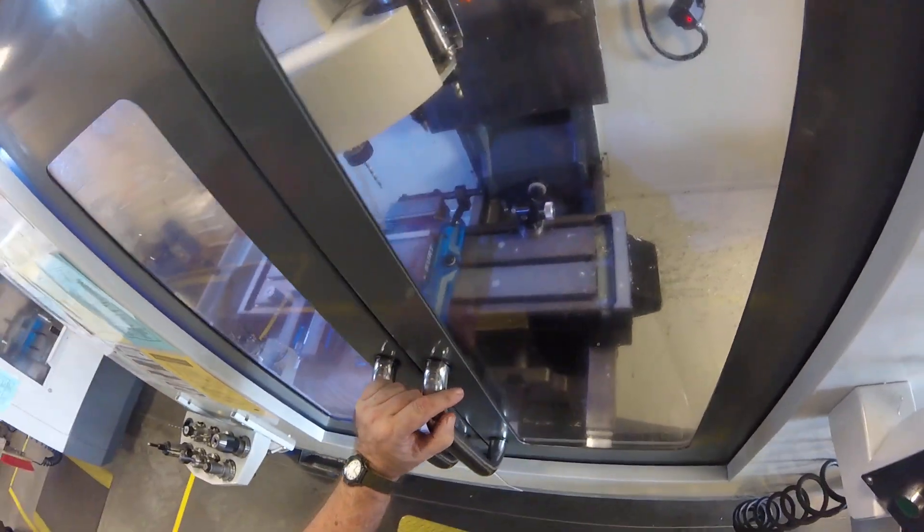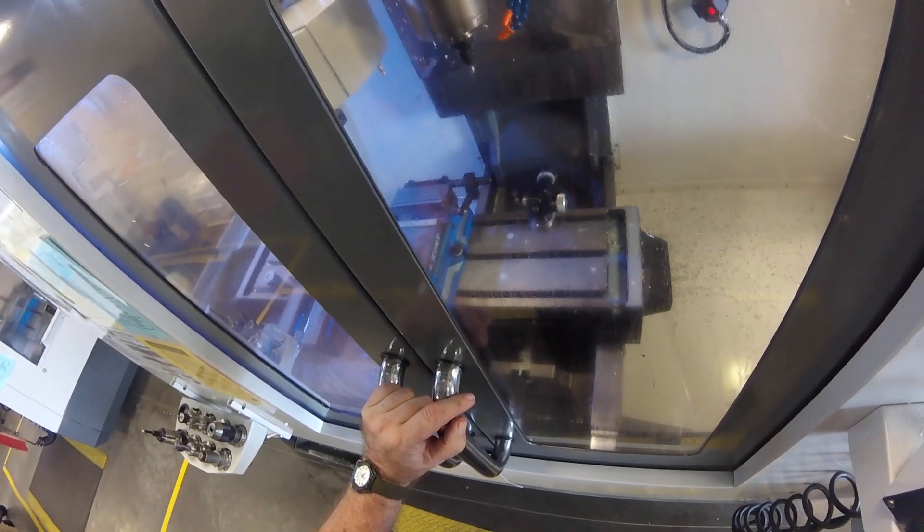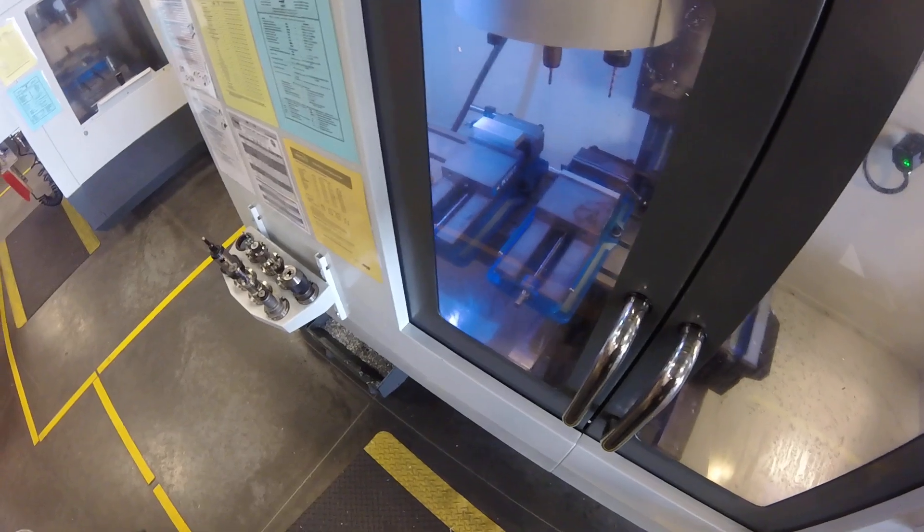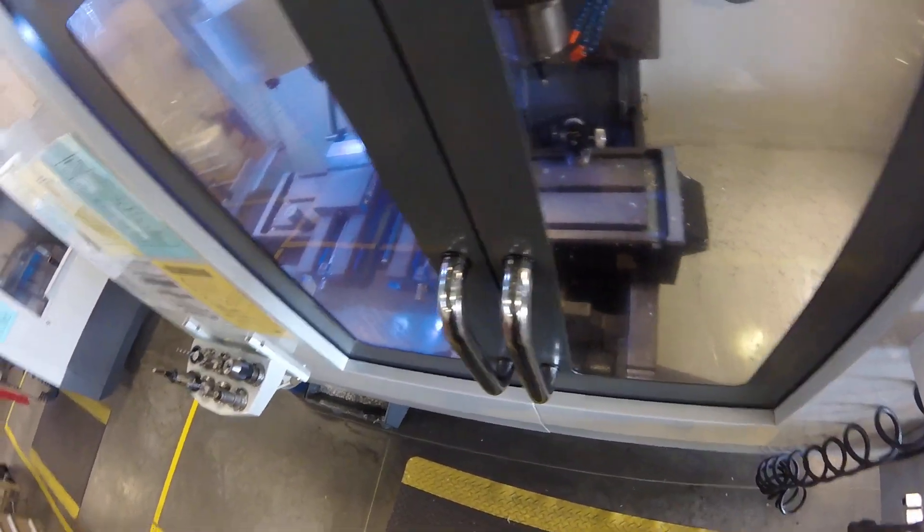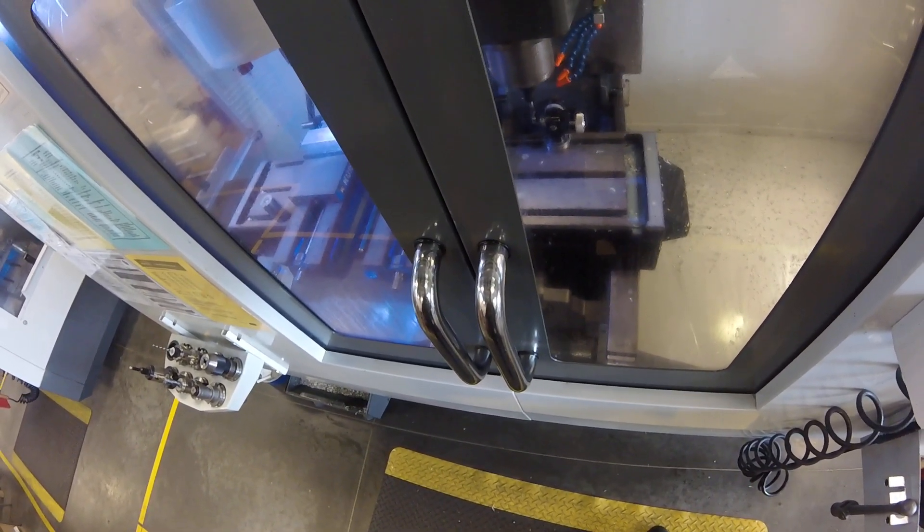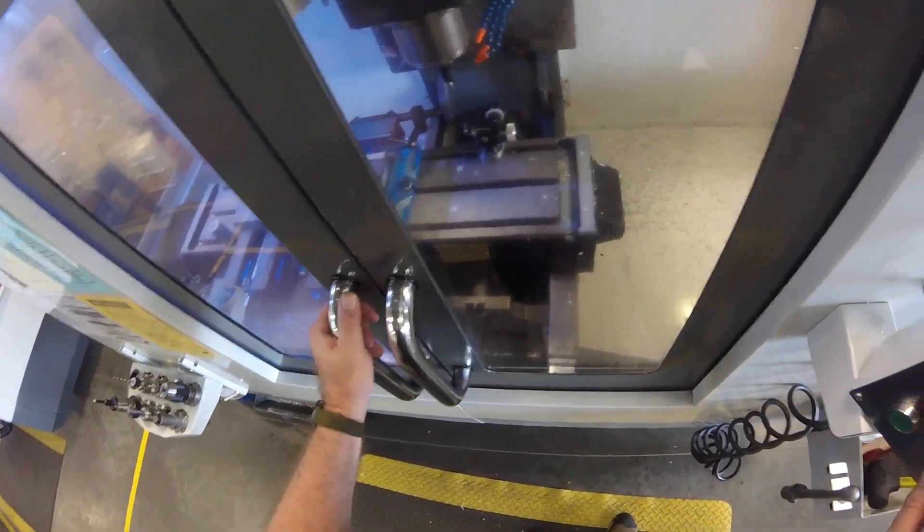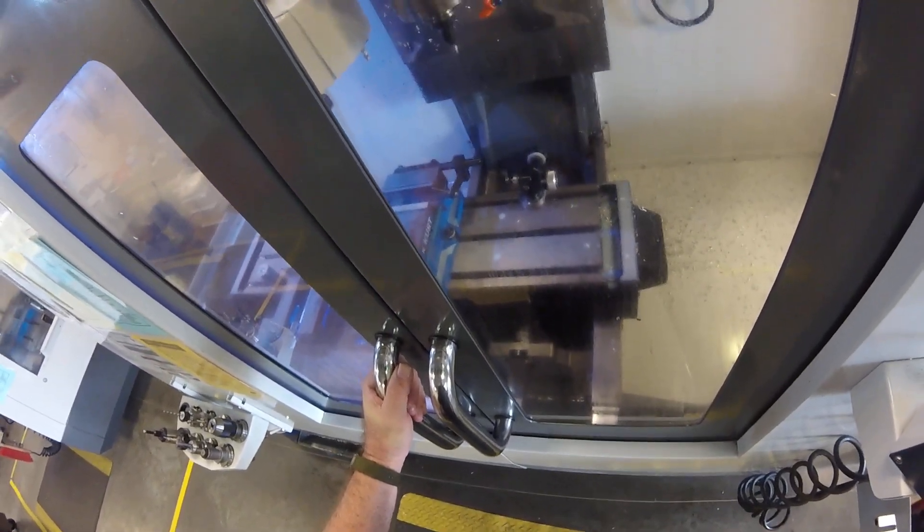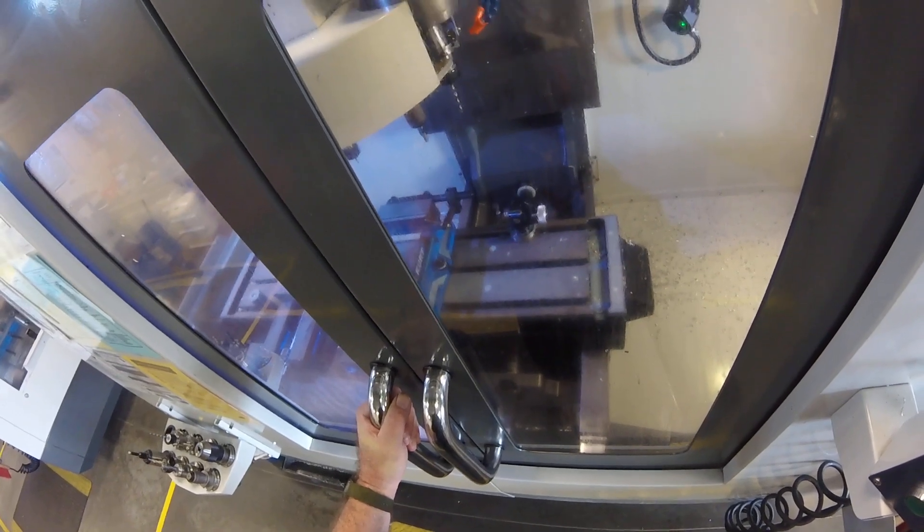And I notice we also have a tool 6. But we use that on our engraving cycle. So that's not part of this job. But first time around, you know, I would always be near the machine with the feed hold button. Just in case.